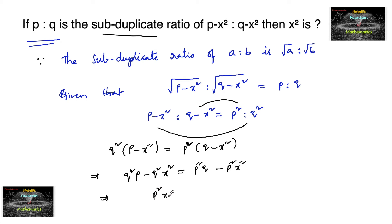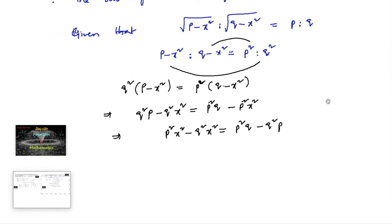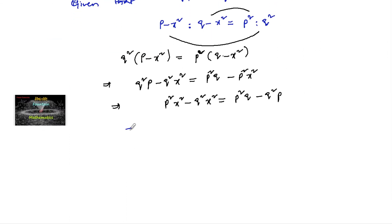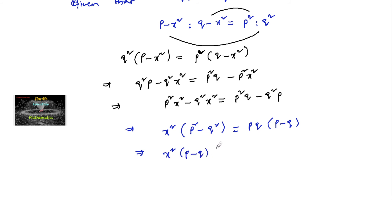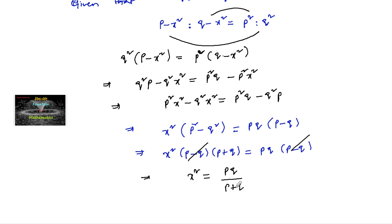Rearranging: p square times x square minus q square times x square is equal to p square q minus q square p. Taking x square common: x square times (p square minus q square) equals p q times (p minus q). Since p square minus q square is (p minus q)(p plus q), the (p minus q) terms cancel, giving x square is equal to p q upon (p plus q).